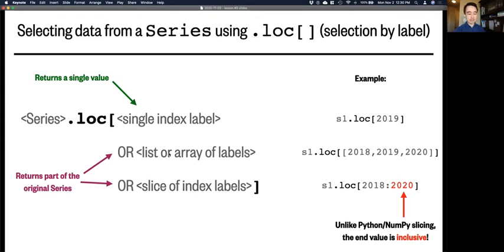You also pass multiple index labels inside a list or array like that. And you can still use slicing, such as this example, 2018 to 2020. But note that when you slice by label rather than by integer index, the end value is inclusive. So this will give the data for years 2018, 2019, and 2020.